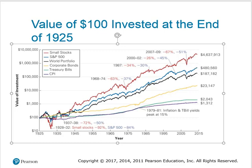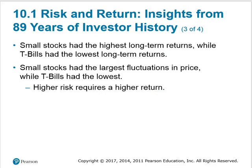The S&P 500 is substantially less in total value, and its rate of return is about 10.1%. So the stock market appears to grow on average around 10% per year. Small stocks have higher long-term returns than large stocks, while T-bills have the lowest long-term returns. You can also see from the picture that small stocks seem to have the greatest amount of variation and volatility. It appears that higher-risk things ultimately require higher returns.